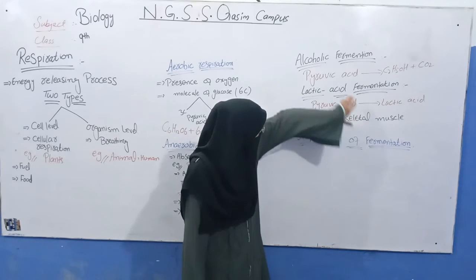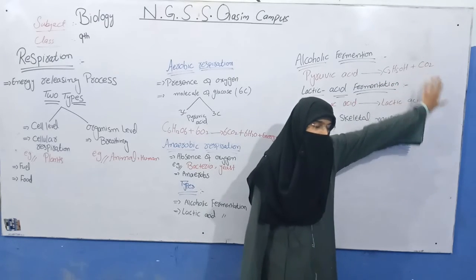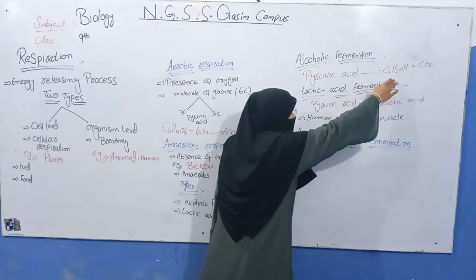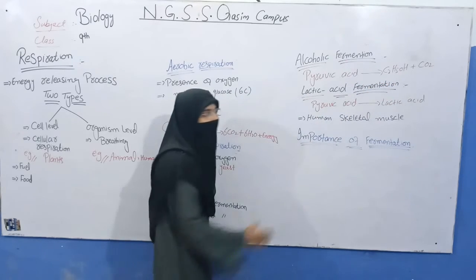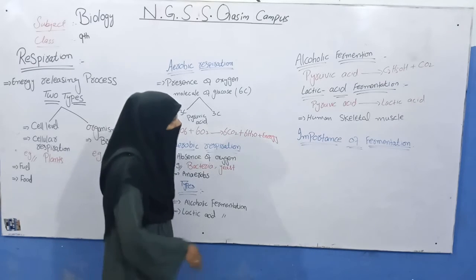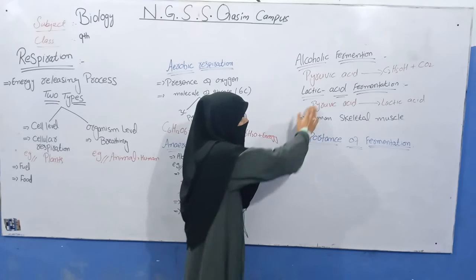Pyruvic acid undergoes further breakdown. One type is alcoholic fermentation. The second type is lactic acid fermentation.